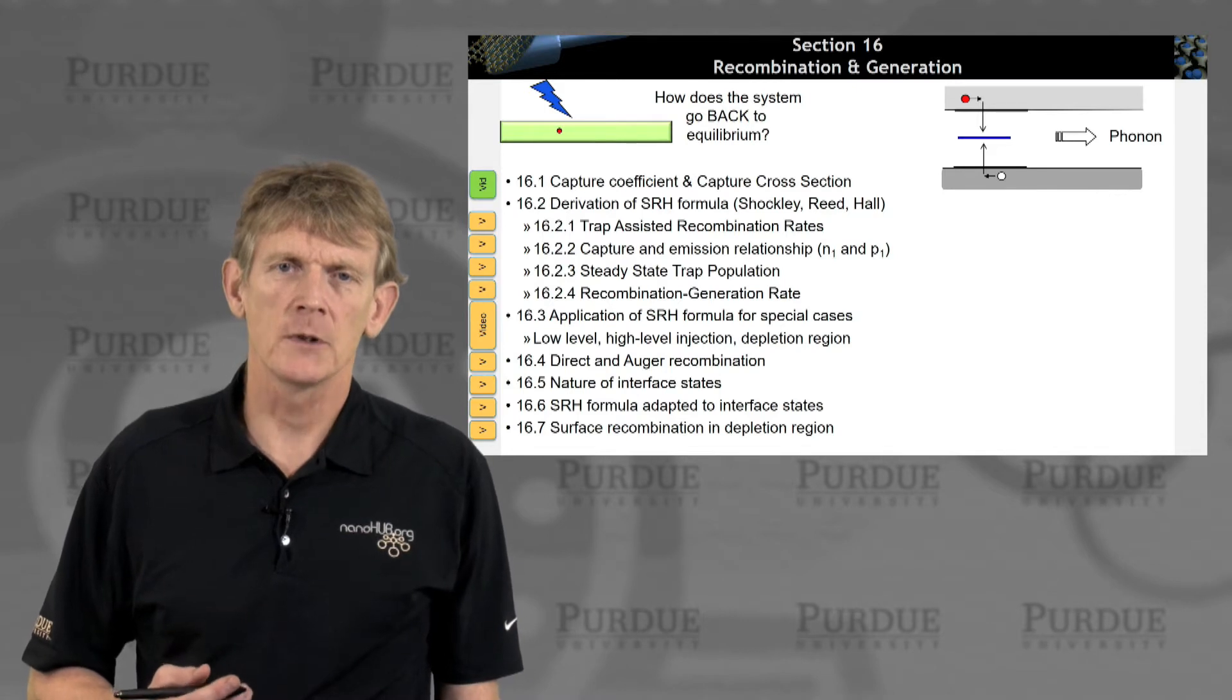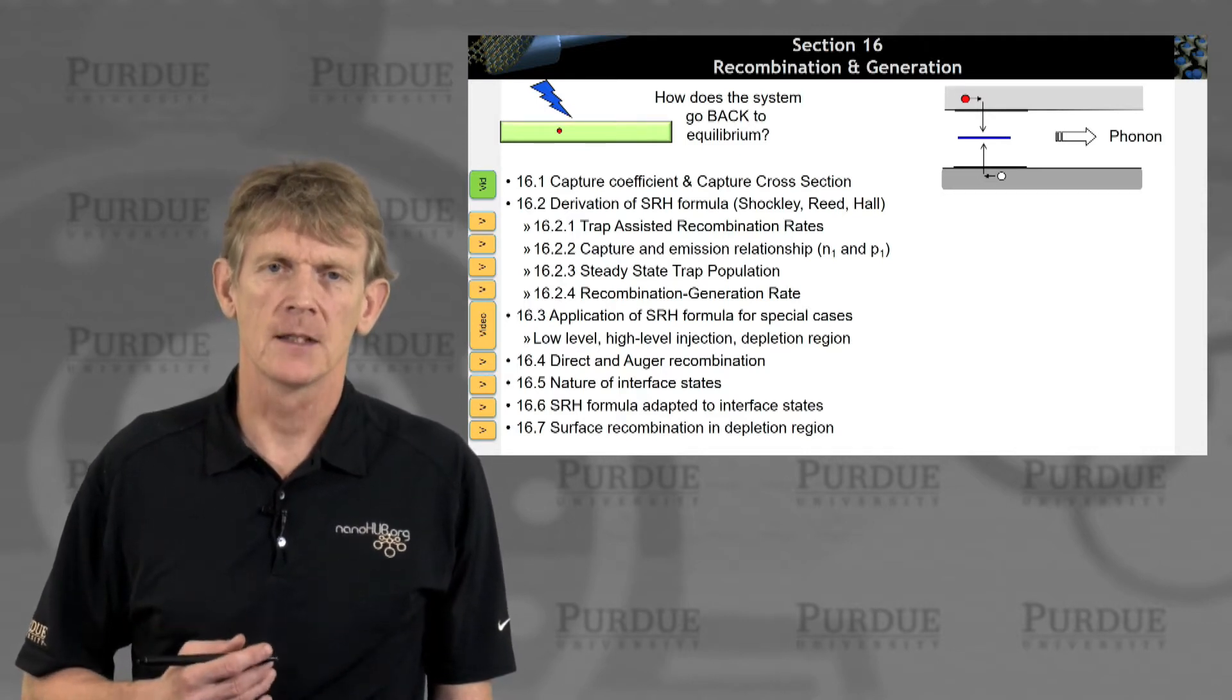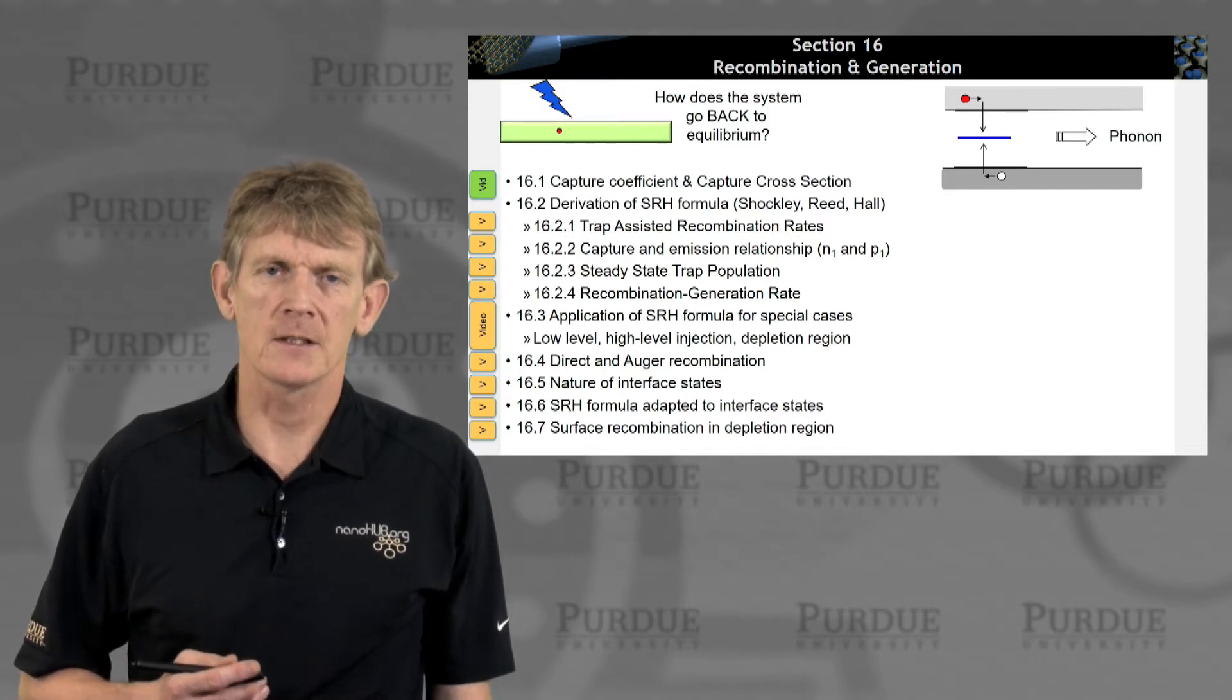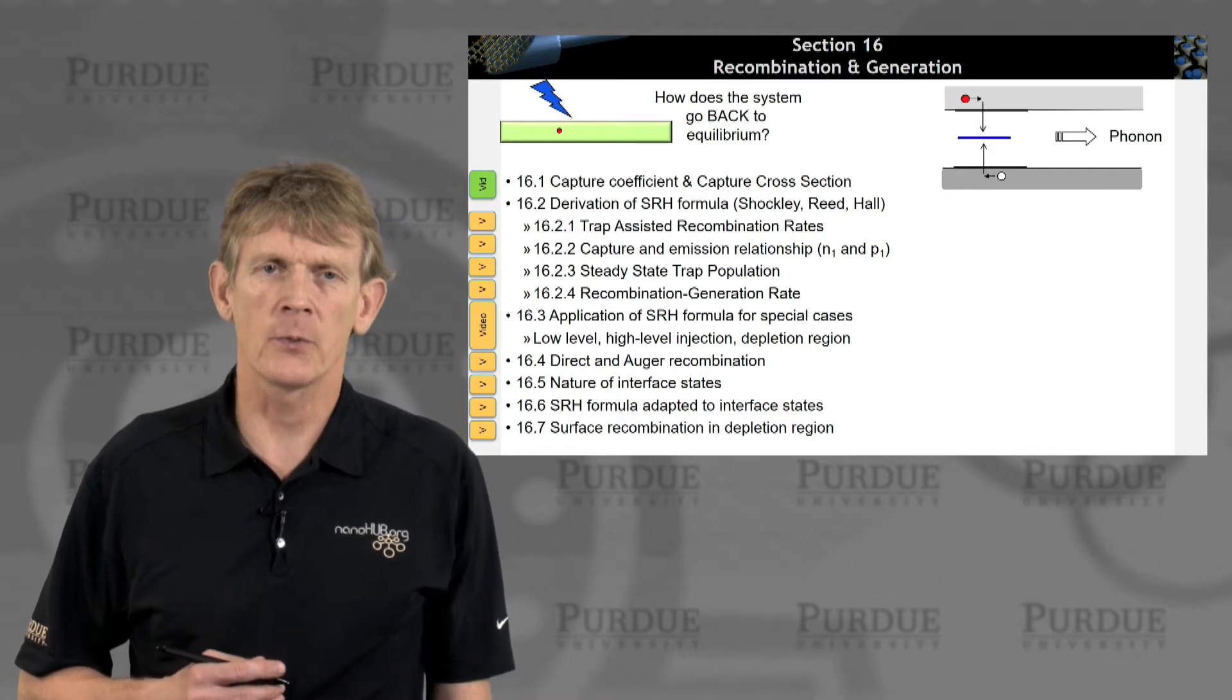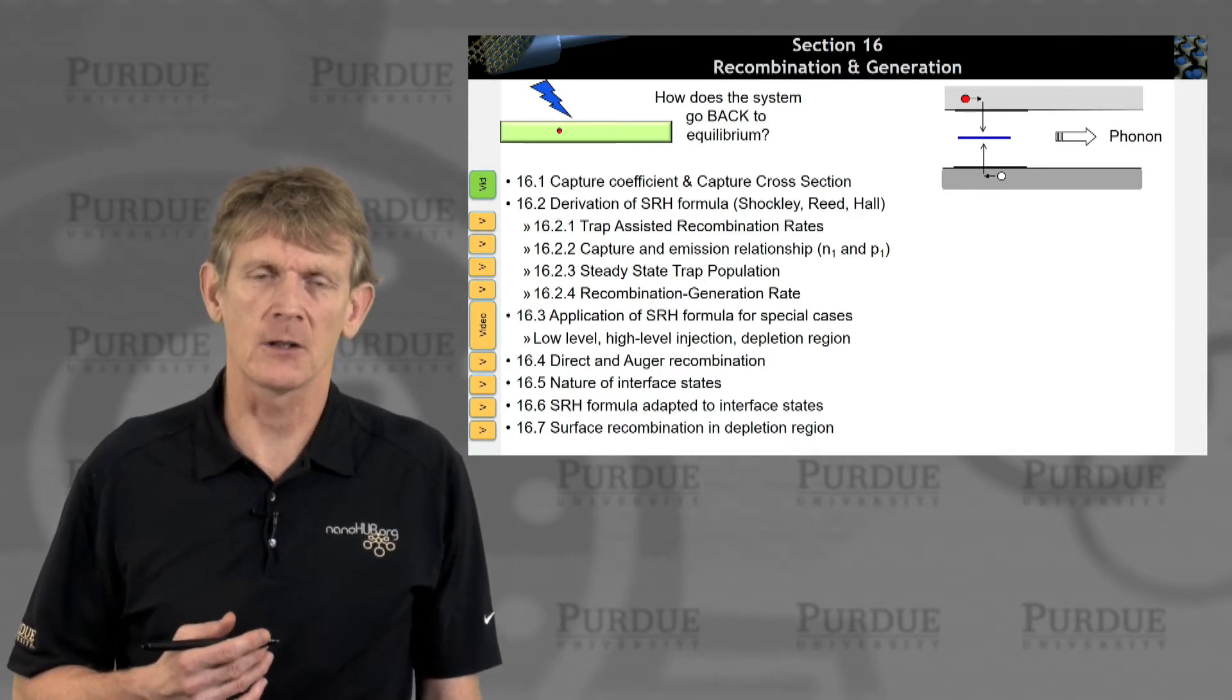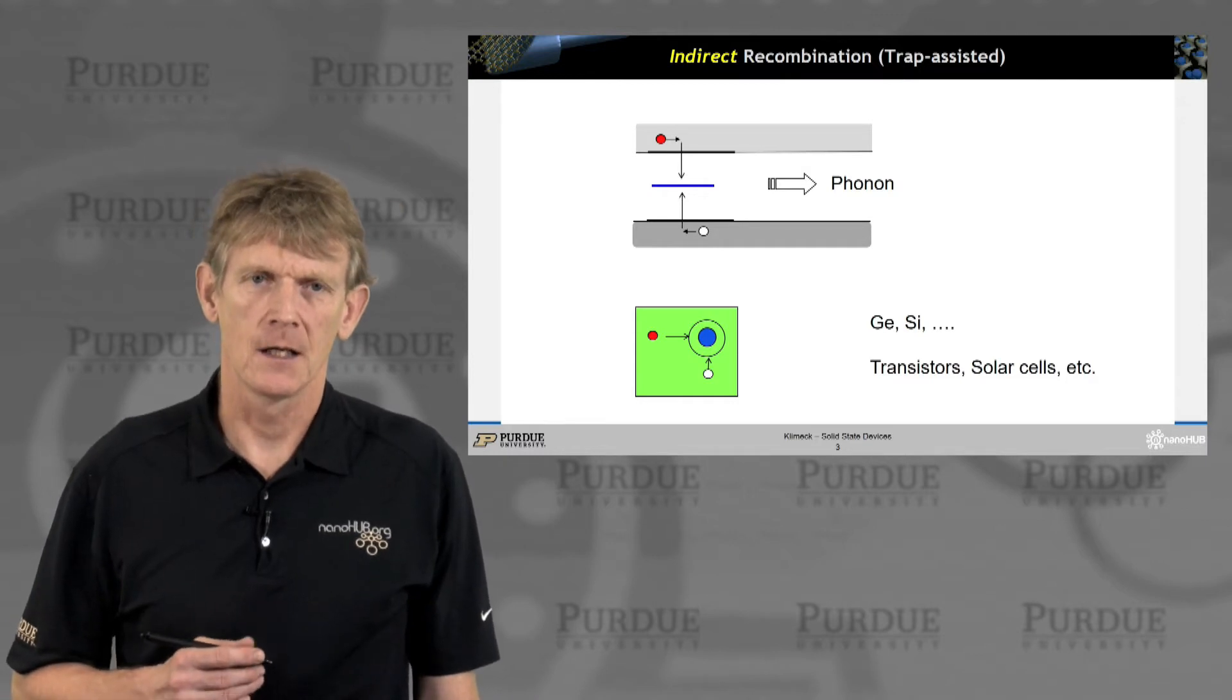So in the first segment, all we're doing is introducing capture coefficients and capture cross sections as an overall concept. Then we will dive down into deriving something called the Shockley-Reed-Hall expression. That's four segments filled with some math, filled with approximations, filled with some insights. Then we'll apply that to special cases, then we'll look at other recombination processes, Auger and Direct, and then we'll look at interface states. All of that are then relevant to overall devices.